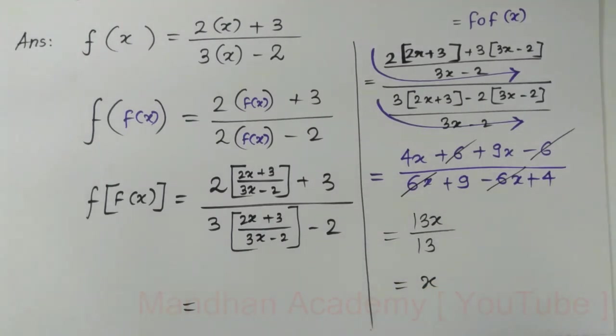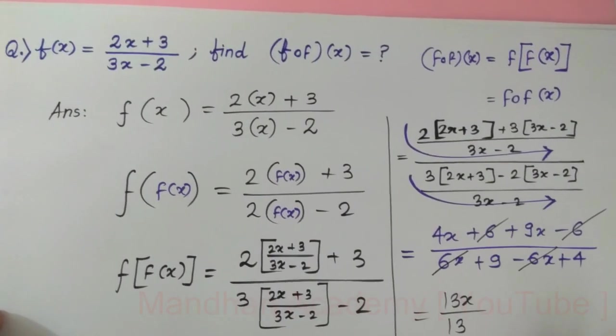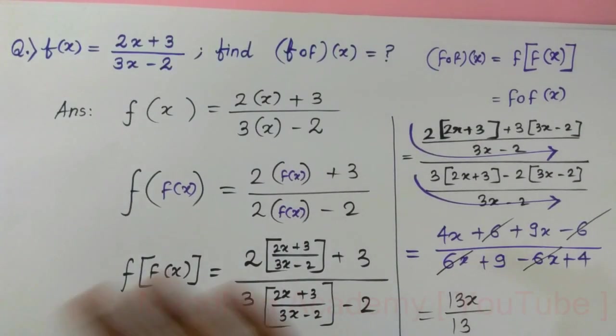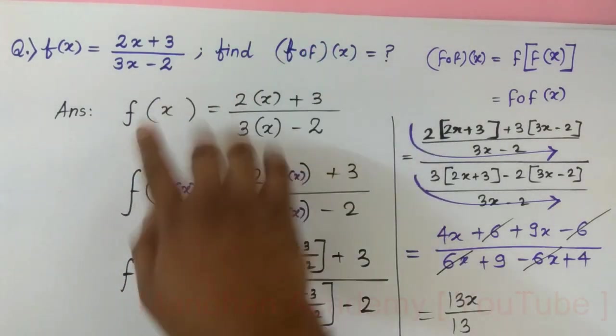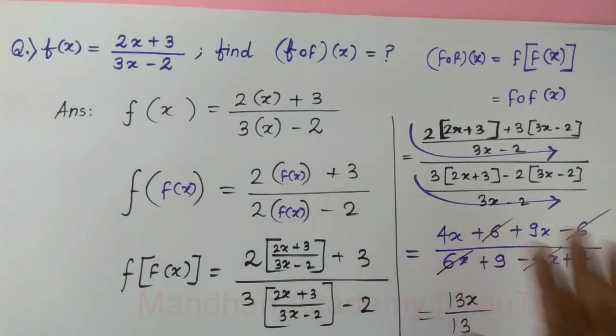So this was the concept behind composite function and this is the method to solve composite function. One thing you need to remember: if you are getting x, this is also called an identity function. The concept behind composite function is substituting function in place of x, and that's it.